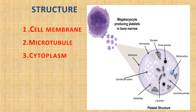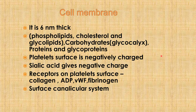The structure of a platelet consists of three things: cell membrane, the microtubular or cytoskeletal system, and cytoplasm. Platelets are nothing but detached bits of megakaryocytes in the bone marrow. The cell membrane is 6 nanometers thick.